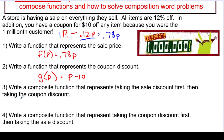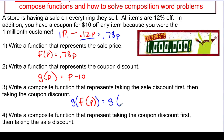Now they're asking us to do a composition of these functions. The first one asks: what happens if we apply the sale first, then take the discount? We want to write a function that represents that. Start by taking the sale discount, which is f of p, then take that answer and plug it into the coupon discount g. So we do g of f of p, and since f of p equals 0.78p, we're computing g of 0.78p.